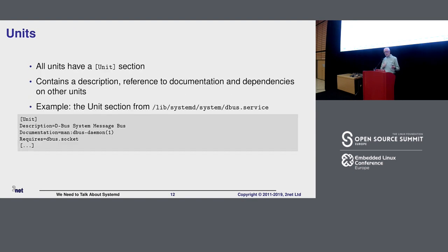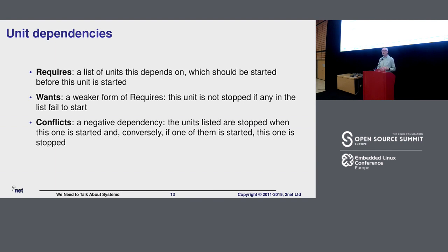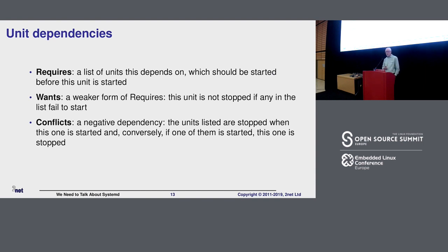Requires is the most common sort of dependency — it says this unit requires some other unit, meaning when I start this unit, it should start up the other units as well. You can also have wants, which is a weaker form of requires: it's not fatal if the wanted unit doesn't start. And conflicts is the opposite of requires — if I have a unit that conflicts with another unit, the two cannot coexist at the same time. If I start this unit, it will stop the other unit.